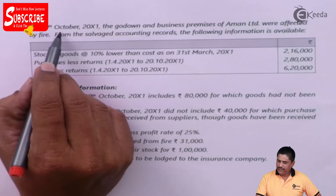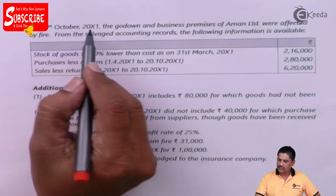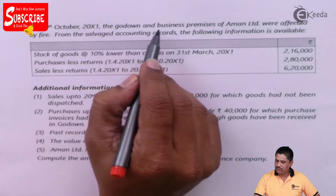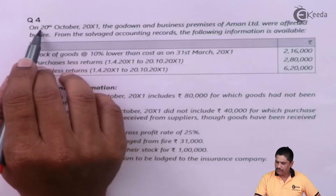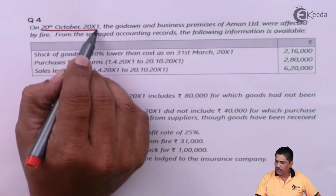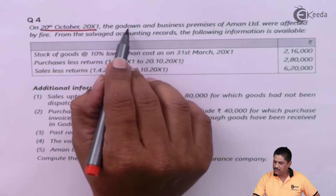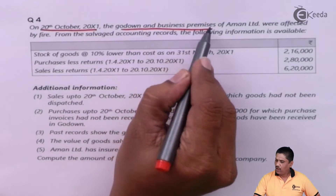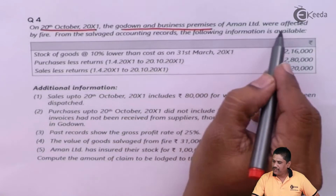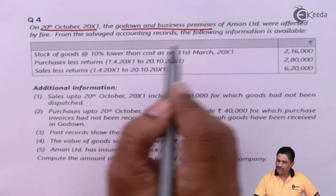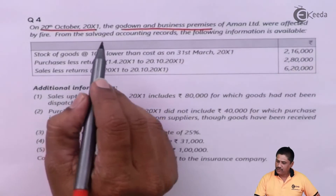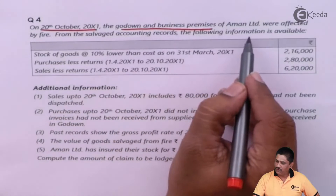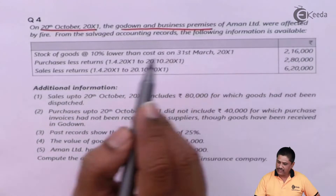On 20th October 200X1, the godown and business premises of Amal Limited were affected by fire. From the salvage accounting records, the following information is available.